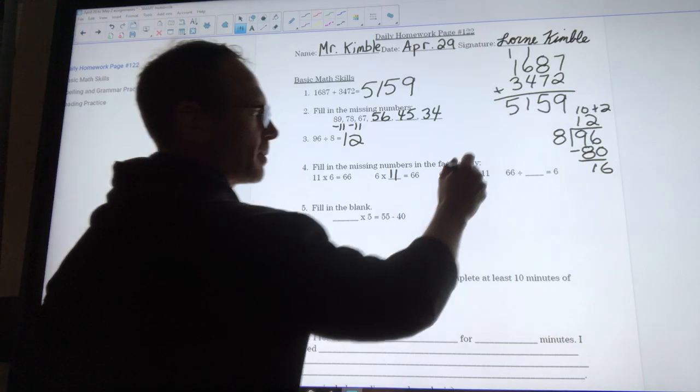Look at these missing numbers. It says 11 times 6 is 66. That means 6 times 11 is 66. It also means that 66 divided by 6 is 11. And 66 divided by 11 is 6.